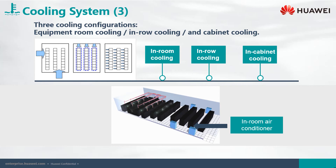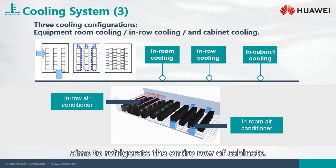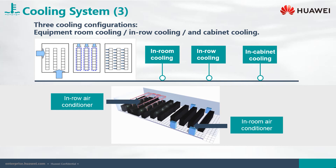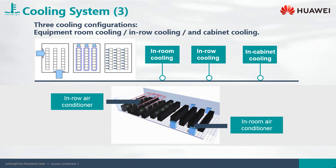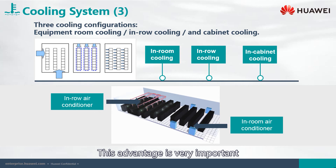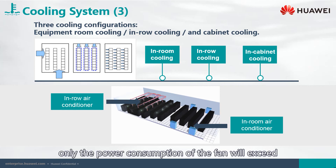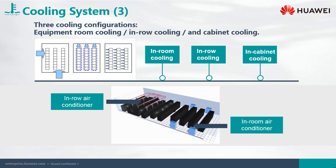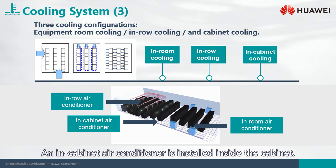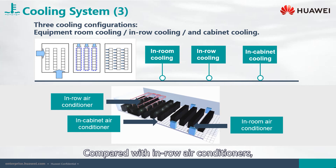The in-row air conditioner aims to refrigerate the entire row of cabinets. Compared with traditional in-room air conditioners, the airflow path is shorter, the power of the fan is reduced, and the efficiency is improved. This advantage is very important because for many small-load data centers, only the power consumption of the fan will exceed the total power consumption of the IT load. In-row air conditioners use their refrigeration capacity to achieve higher power density. An in-cabinet air conditioner is installed inside the cabinet. Compared with in-row air conditioners, the airflow path is shorter and the power density is higher.